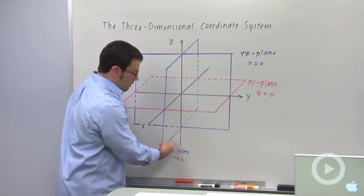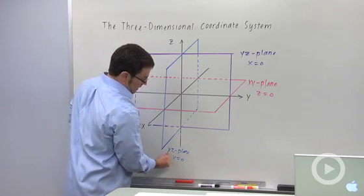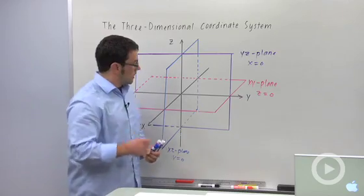And you probably noticed, the way to remember what the equation of the plane is, is what letter's missing? xz, the missing letter is y. So y equals 0 is the equation.